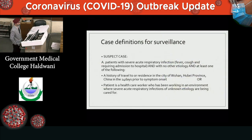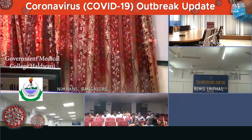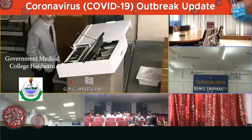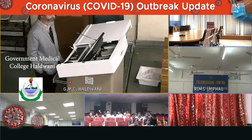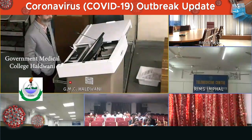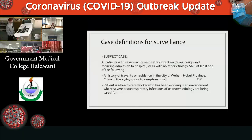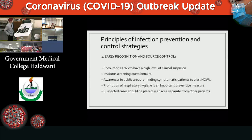Case definition for a suspect case: a patient with severe acute respiratory infection, fever, cough, requiring hospital admission, with no other etiology, and at least one of the following — history of travel to or residence in the city of Wuhan or Hubei province in China in the 14 days prior to symptom onset. Healthcare workers should have a high level of clinical suspicion. An institute screening questionnaire should be in place, public awareness should be maintained, prompt respiratory hygiene practiced, and suspected cases placed in an area separate from other patients, with isolation and quarantine bays.